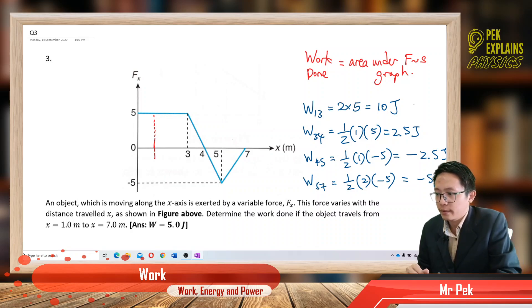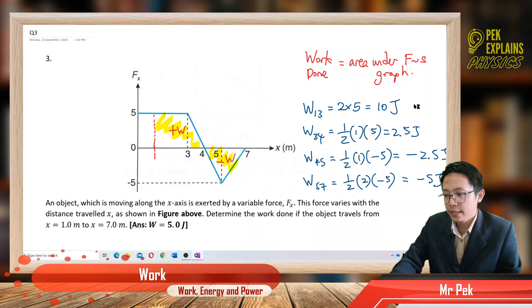So can you see that? For area on top, it's all positive work done. But for the area below, here all you get negative work done. All right, negative work done.